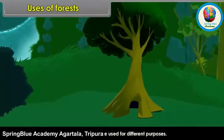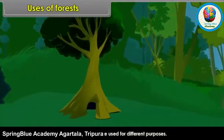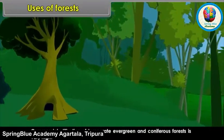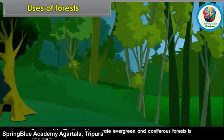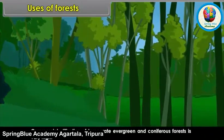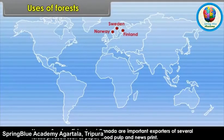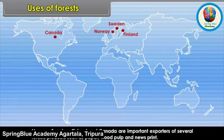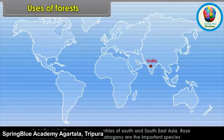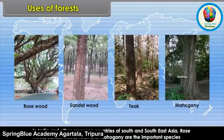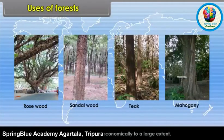Uses of Forests: Forest resources can be used for different purposes. Commercial utilization of temperate, evergreen and coniferous forests is very high. Norway, Sweden, Finland and Canada are important exporters of several forest products such as paper, wood pulp and newsprint. In India and other monsoon countries of South and Southeast Asia, rosewood, sandalwood, teak and mahogany are important species which have been used economically to a large extent.